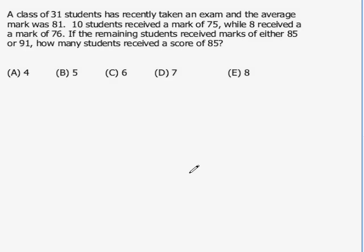A class of 31 students has recently taken an exam and the average mark was 81. Ten students received a mark of 75 while eight received a mark of 76. If the remaining students received marks of either 85 or 91, how many students received a score of 85?